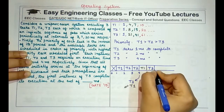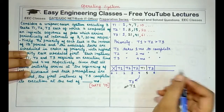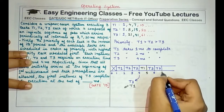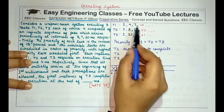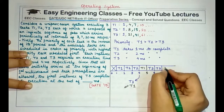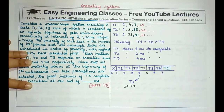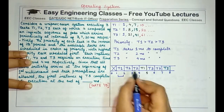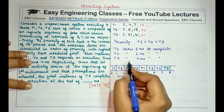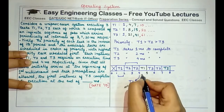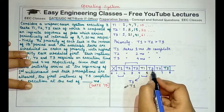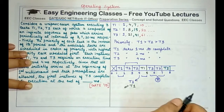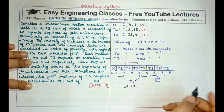We start executing the first instance of T3 at 5 milliseconds. At 6 milliseconds, no higher-priority process is available, so we keep executing T3. At 7 milliseconds, the third instance of T1 arrives, so T3 is preempted and T1 is scheduled. T1 takes 1 millisecond and completes. By this point, T1's first and second instances and T2's first instance are all complete, but T3 has only executed for 2 milliseconds, so 2 milliseconds of T3 remain.